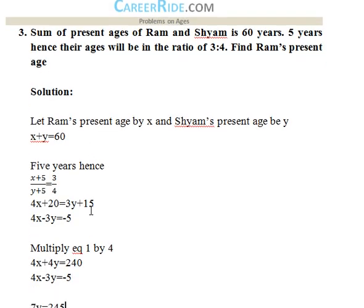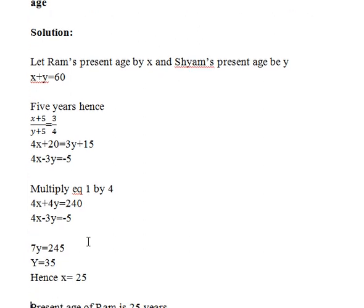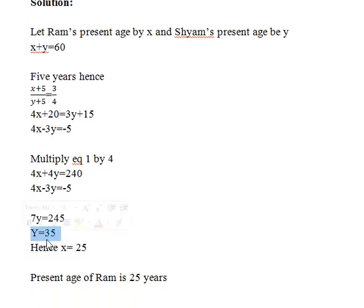Third question: The sum of present ages of Ram and Shyam is 60 years. Five years hence their ages will be in the ratio 3 is to 4. We have to find Ram's present age. If Ram's age is X and Shyam's is Y, then X plus Y equals 60. Five years hence, X plus 5 to Y plus 5 equals 3 to 4, giving equation 2: 4X minus 3Y equals negative 5. Solving simultaneously gives Y equals 35.